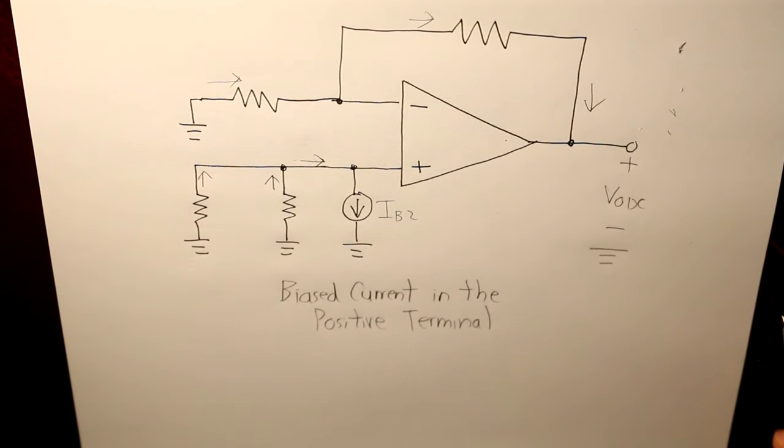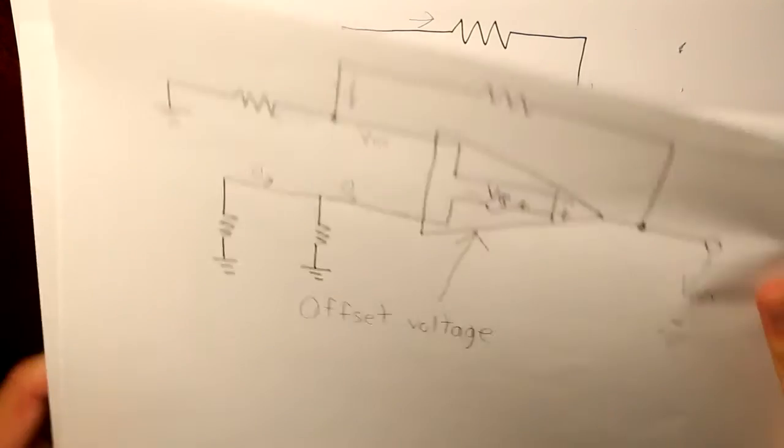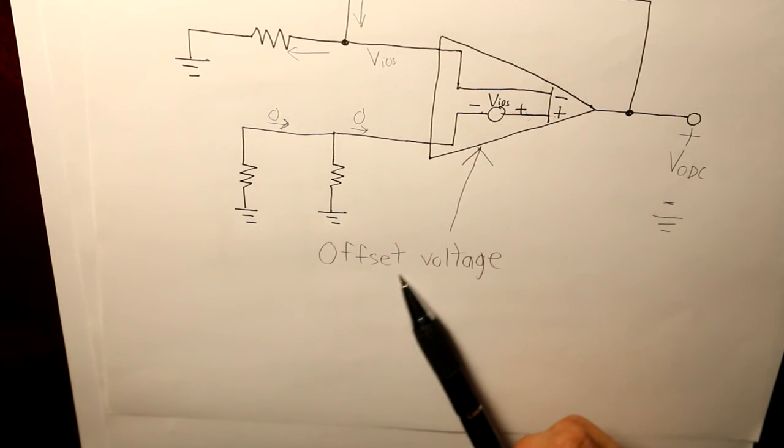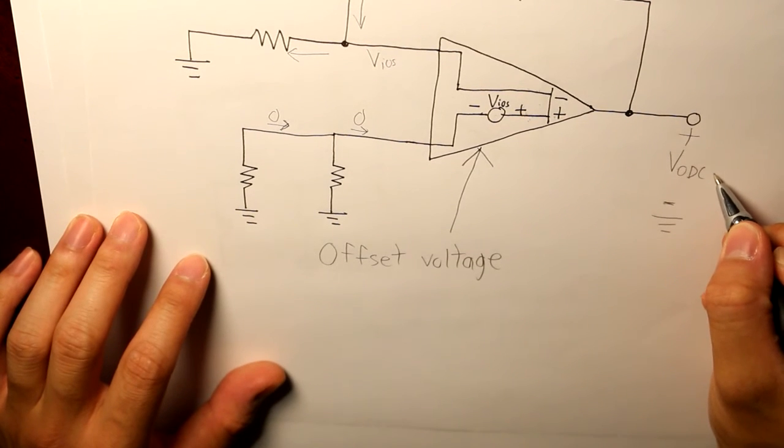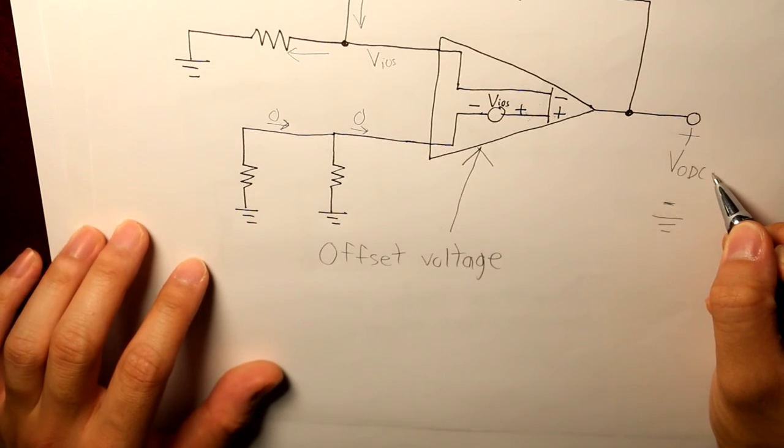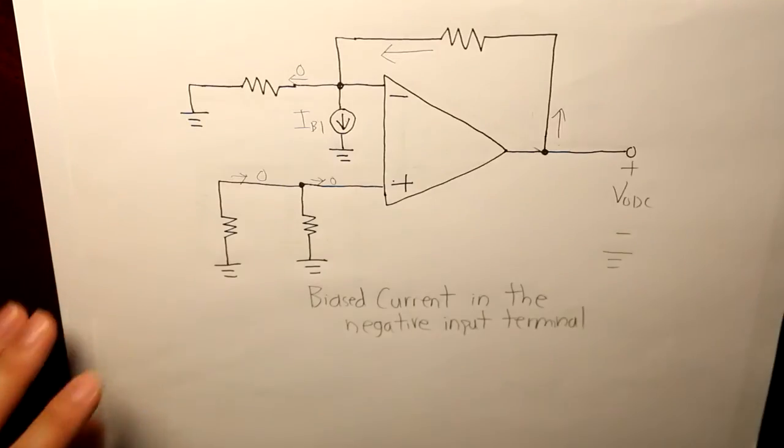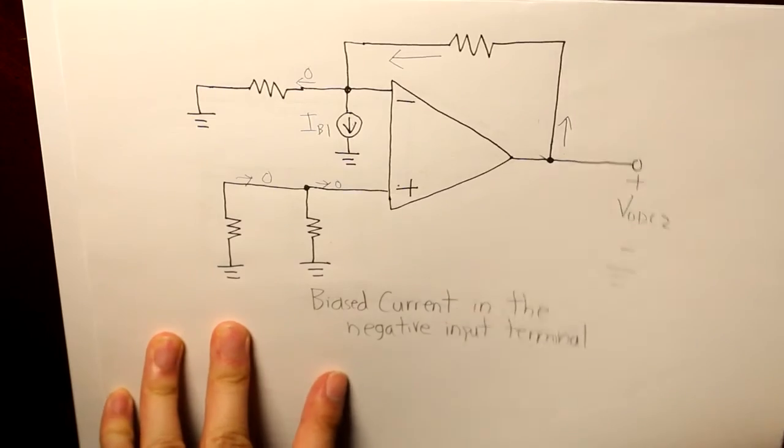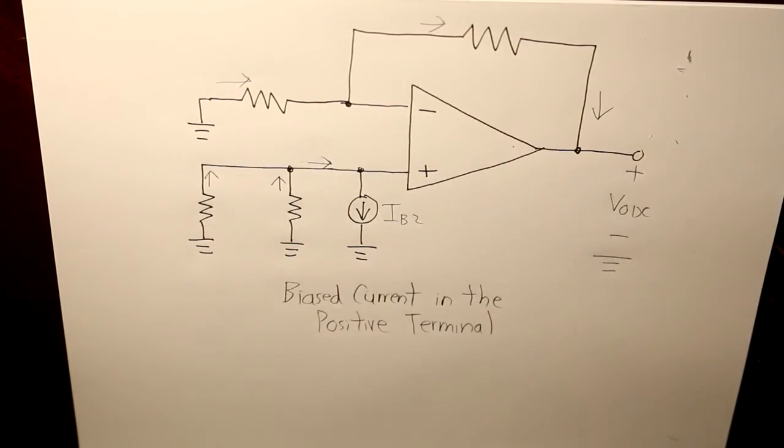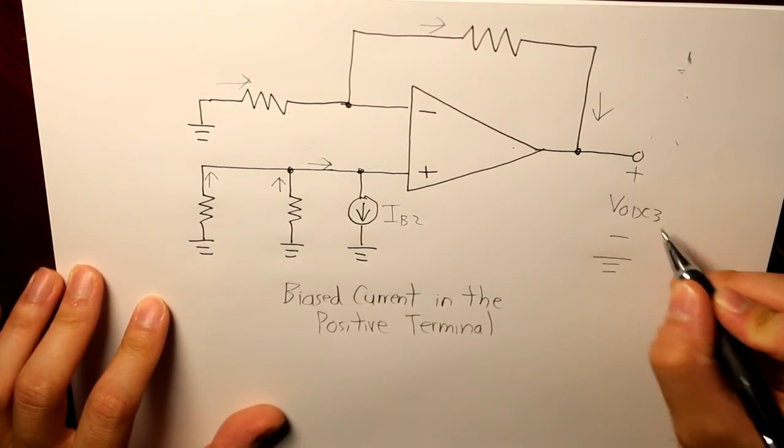And if we take into consideration all of the DC output voltages, so we're going back to the offset voltage, and we can label the DC output voltage here as 1, our second part as 2, and our third part as 3.